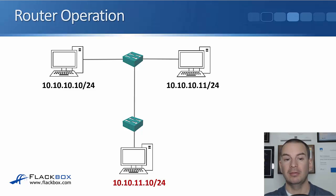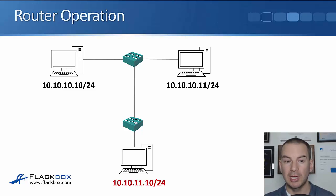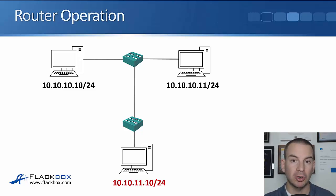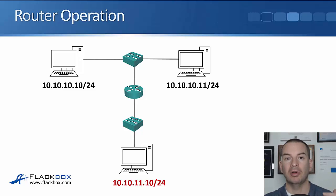But if one of those hosts had the IP address 10.10.11.10/24, it's now on a different IP subnet and it won't be able to communicate with the other hosts on the 10.10.10 network if we only have switches. It's in another layer 3 network, so we need a layer 3 device — a router — to route traffic between those hosts. So we put a router into the infrastructure, and it's now aware of the 10.10.10 and the 10.10.11 networks and can route traffic between all the hosts.